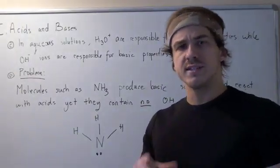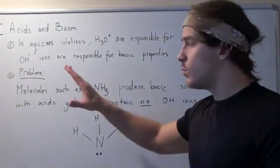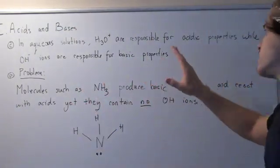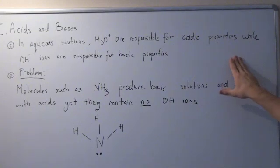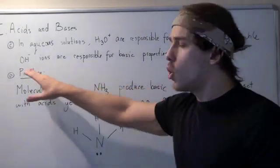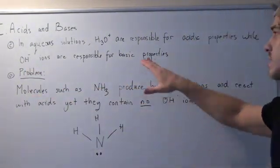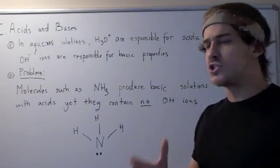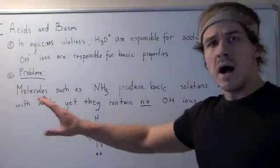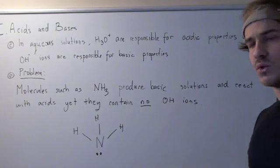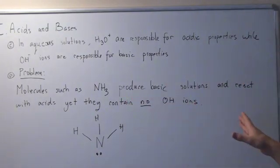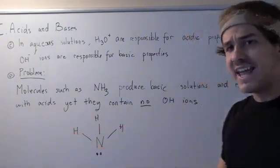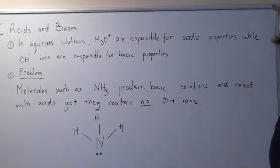According to the Arrhenius acid-base concept, in aqueous solutions, the hydronium ions are responsible for acidic properties, and the OH ions are responsible for the basic properties. One problem with such a definition exists: molecules such as ammonia that produce basic solutions and react with acids, and yet they have no OH ions.